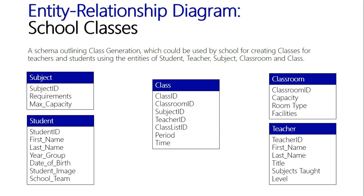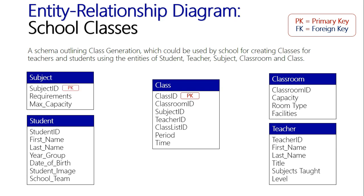First, let's associate our primary keys. Class ID is the main primary key for each class — every class gets a code. For example, a tech class might be TEC H A, or 'seven tech A' or 'nine tech A' with a year group. We then add in our subject — if it is tech, it's going to be a technology class.